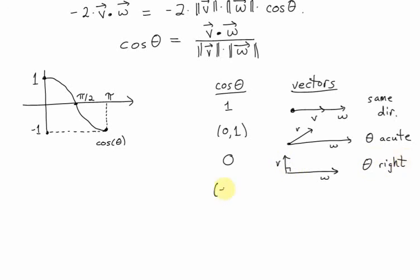If you have a number between negative 1 and 0 for the cosine, the number is in that interval, then you know your angle between the vectors is obtuse.